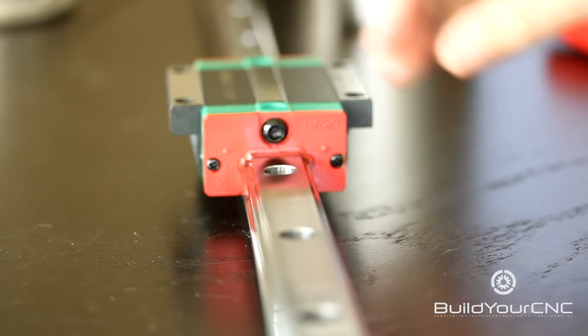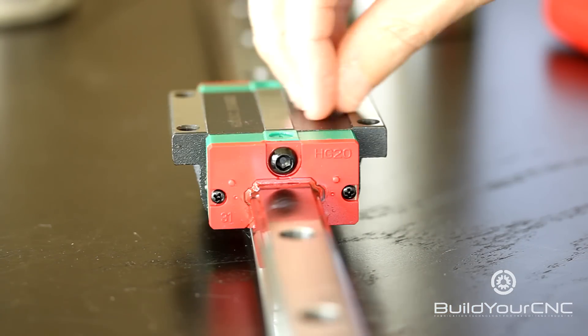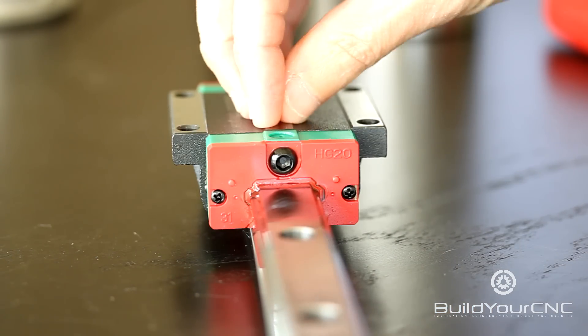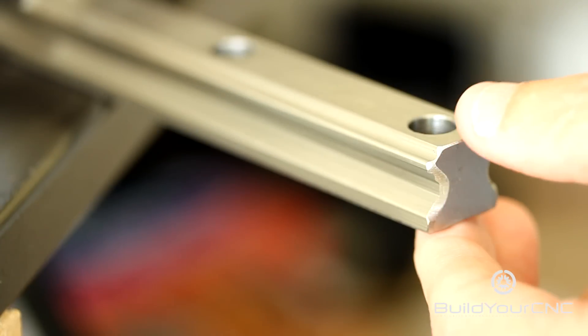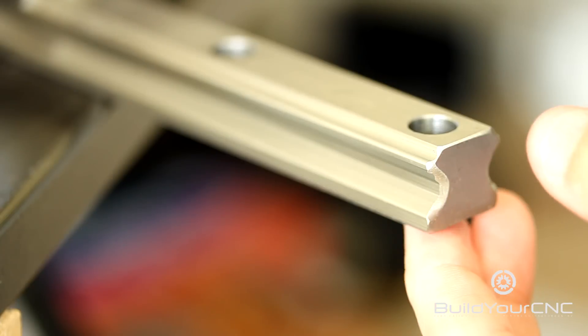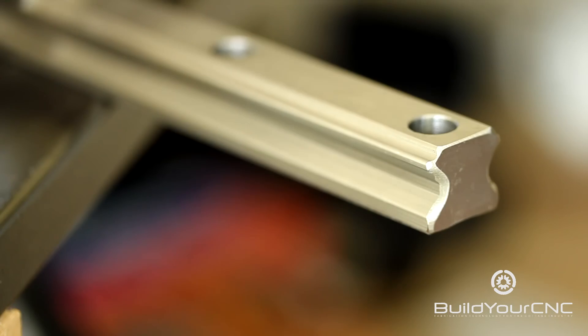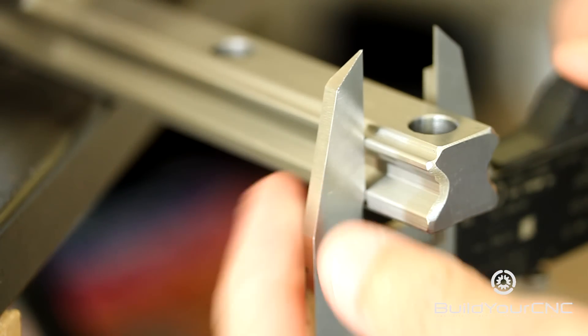The guideway eliminates or minimizes any sideways motion and up and down motion and only allows for linear motion. Generally, these high wind rails come as a designation of the width of the rail, which in this case these are the 20mm.